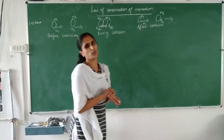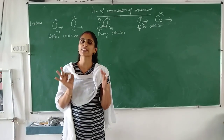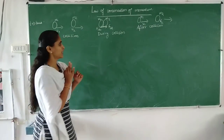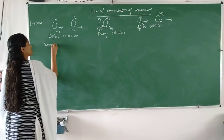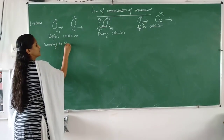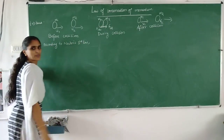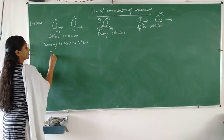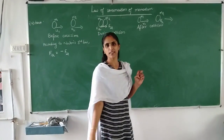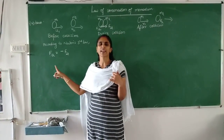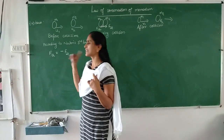We obtain the law of conservation of momentum from Newton's third law of motion. According to Newton's third law, F12 is equal to minus F21, because both forces are equal in magnitude but opposite in direction. Using Newton's second law, force equals mass times acceleration. So we can write: M1 × A1 = −M2 × A2.